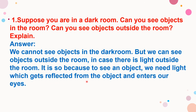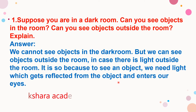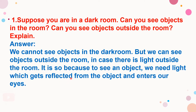If there is light outside the room, we can see objects outside. This is because to see an object we need light which gets reflected from the object and enters our eyes. The image falls on the retina and then we can see the objects. So in the dark room we cannot see objects, but outside the room, if there is light, we can.